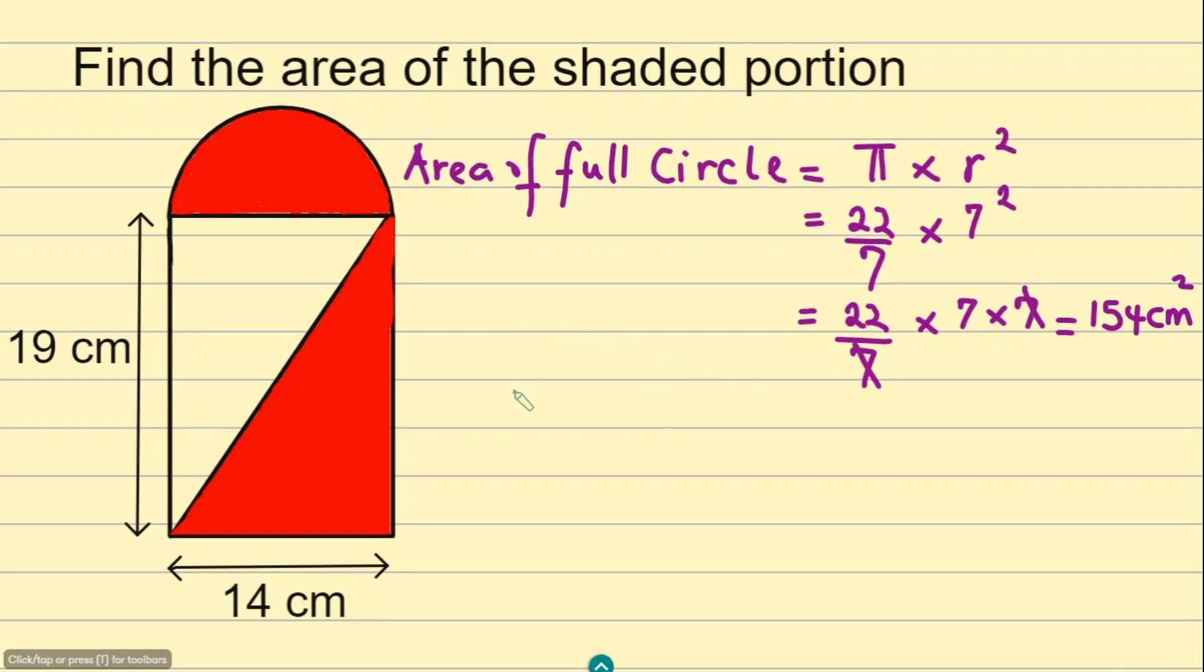To find the area of the semicircle, you have to halve this answer. So the area of the semicircle, which is actually the shaded part, will be 154 divided by 2. That's going to give us 77 centimeters squared.